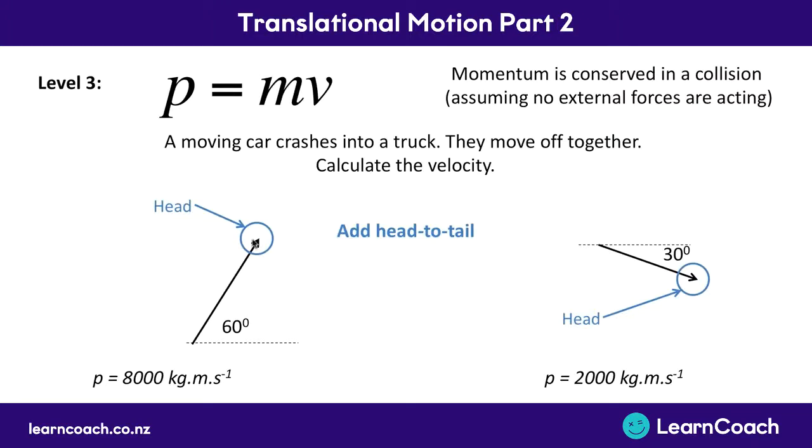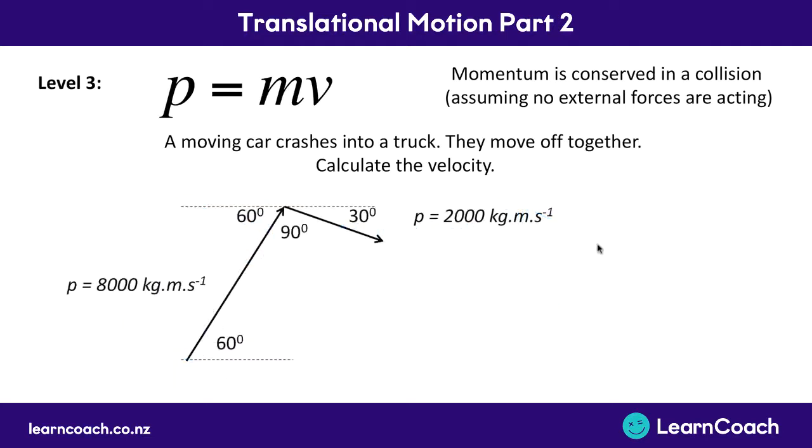So head to tail means that you take the head of one of the arrows, so that means the pointy part here, and you join it with the tail of the other arrow, so that's the very start of the arrow. So I'm going to take this one on the right here, move it over to the left so we've got the big car's momentum and then we've got the truck's momentum. So it's joined together the head of the car to the tail of the truck.